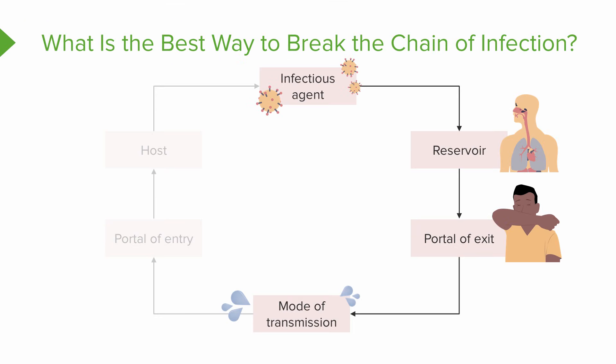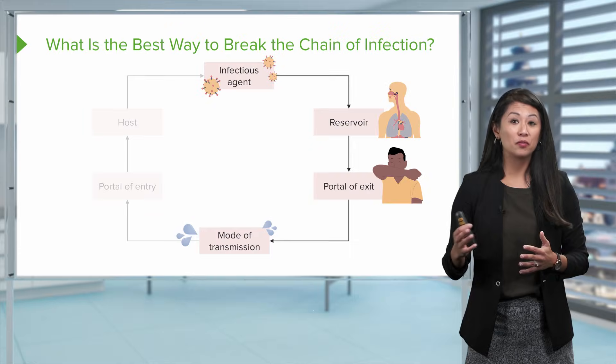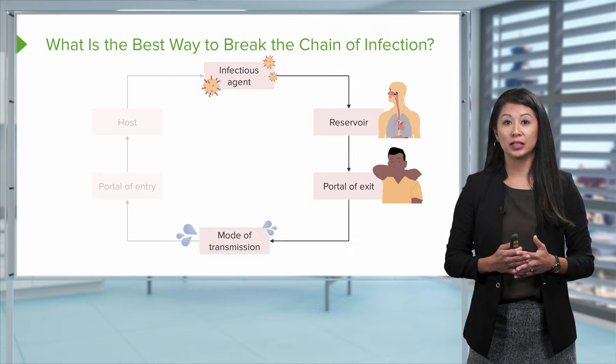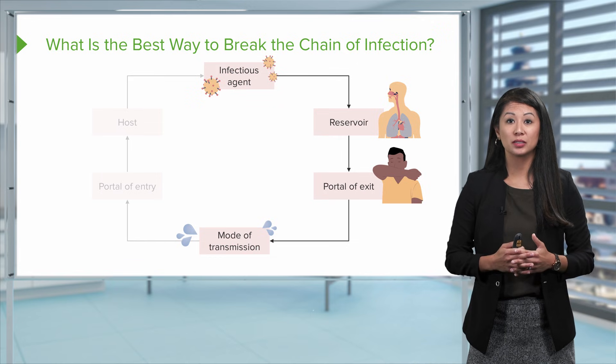Those different body fluids can be transmitted from the reservoir via different modes. Some of those modes of transmission can include direct contact, respiratory droplets, or airborne. If we think about the flu virus specifically, this typically travels via respiratory droplets.